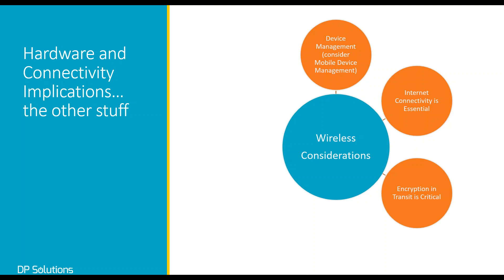Encryption in transit is critical. In the old central-office model, sending a document with social security numbers between your computer and the file server was internal — over lines in the wall — and assuming the perimeter was reasonably secure, that information was under control, like a private conversation in your home. But now we're sending sensitive information over the public internet to a cloud host, bumping up against Netflix, Amazon browsing, and cybercrime. We need to make sure that traffic is unreadable to everyone else.